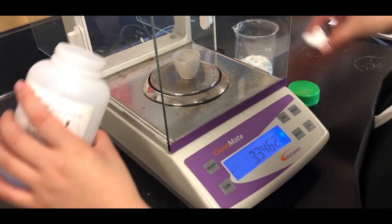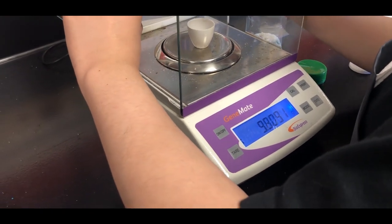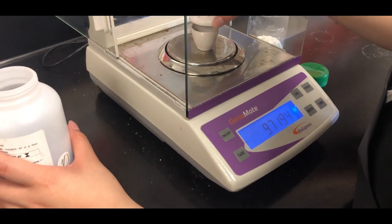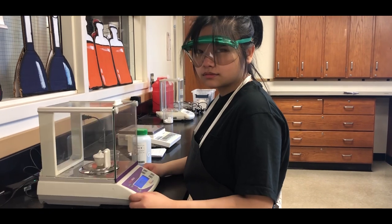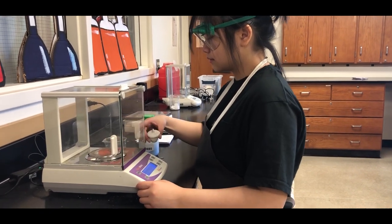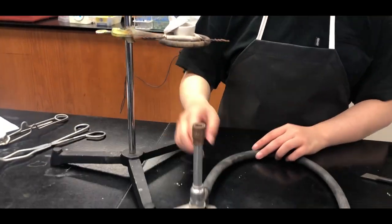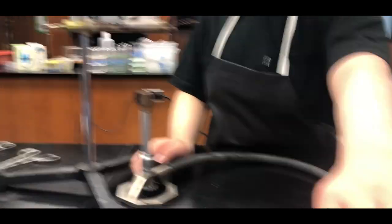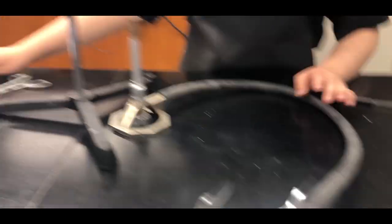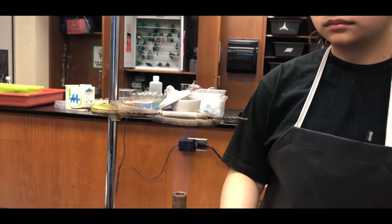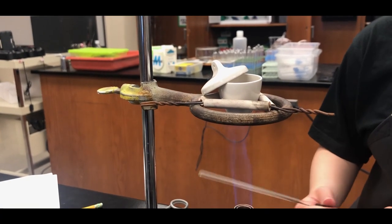Step 4 is to measure and record the total mass. Place the crucible on top of the clay triangle above the burner. Turn on the gas, light up the burner, make sure that the flame is blue. Make sure that the lid of the crucible is half open.